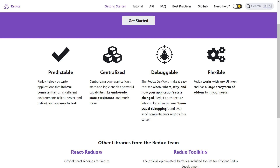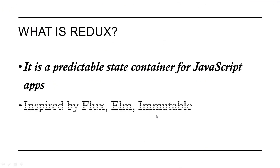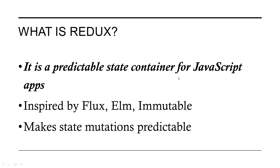Redux is very flexible — it will work with any type of UI in any application. It is inspired by the flux structure and uses an immutable structure, meaning the state cannot be changed until we apply a dispatch function or add data to Redux. That is the flux architecture, which I will explain in the next few slides. It also makes state mutation predictable.